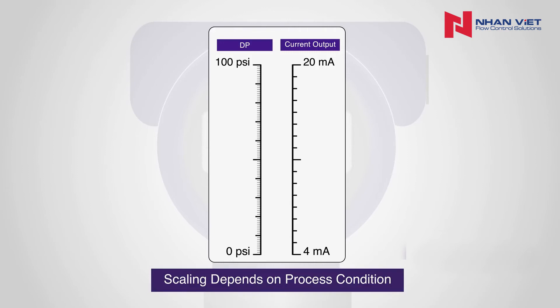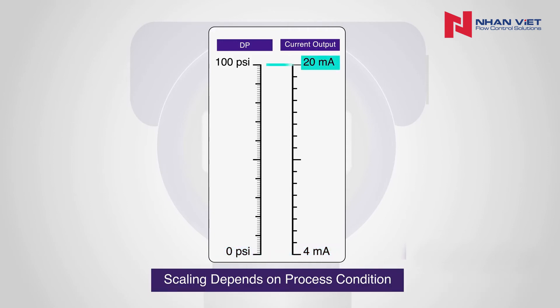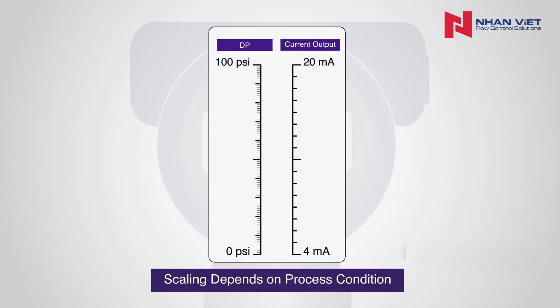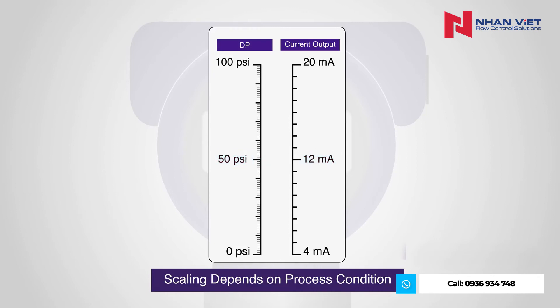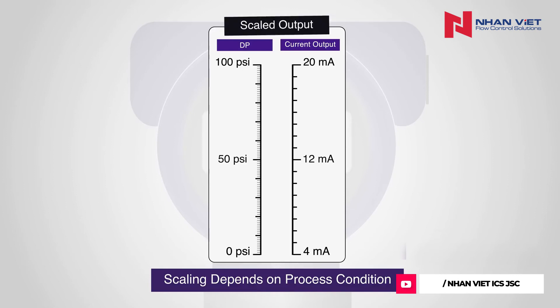The electrical output generated by the DP transmitter electronic module is linear and proportional to the actual measured delta P. Depending on the range of measured pressure, a 4 milliamp signal would equal a measured delta P of 0 psi, and a 20 milliamp signal would equal the maximum measurable value — in this case, 100 psi. Using these variables, we would know that a 12 milliamp signal would equal 50 psi delta P. The relationship of the produced electrical signal to the units of measure is called the scaled output.